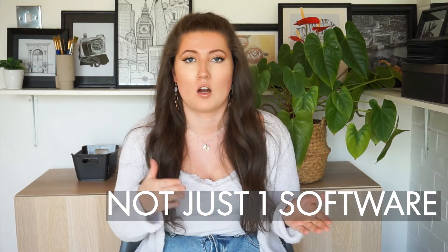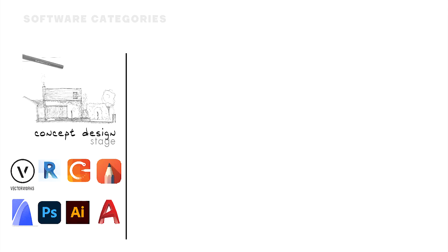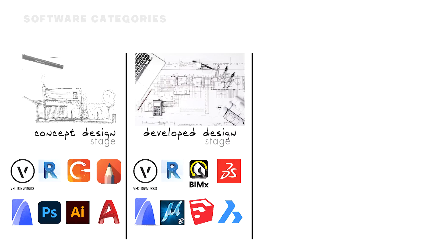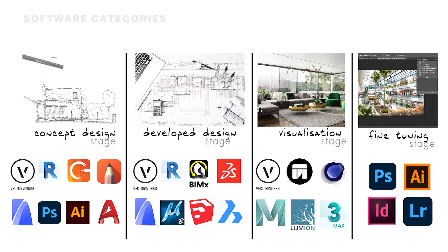It's important to know that there's not one magical software that's going to let you do your whole project from start to finish. They're more likely divided into different types of groups. We start off with the schematic or concept stage, which moves on to developed design and visualisation or rendering packages, and then your fine-tuning and editing programs. Normally you'll find that the first stage and second stage have the same software types.